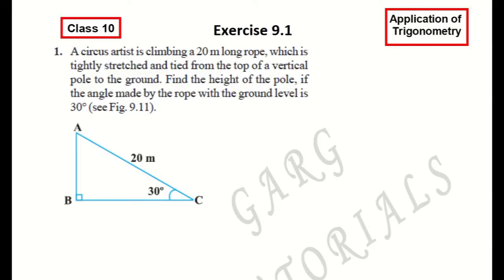Hi, this is Neeraj Garg and you are watching Class 10th Chapter 9, Application of Trigonometry, Exercise 9.1, Question 1. A circus artist is climbing a 20-meter long rope which is tightly stretched from the top of a vertical pole to the ground. Find the height of the pole if the angle made by the rope with the ground level is 30 degrees. See Figure 9.11.